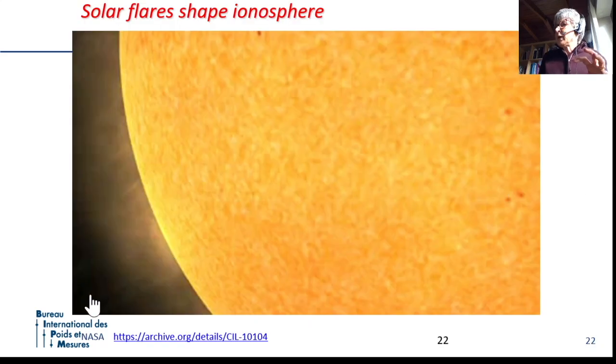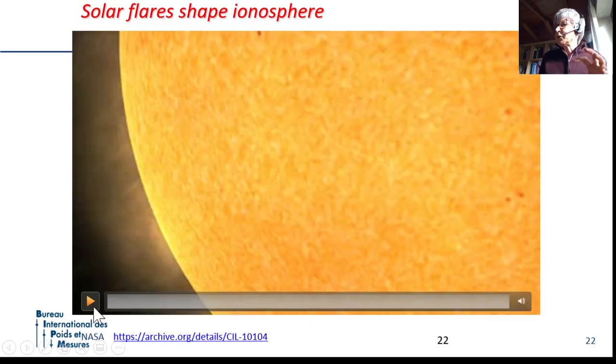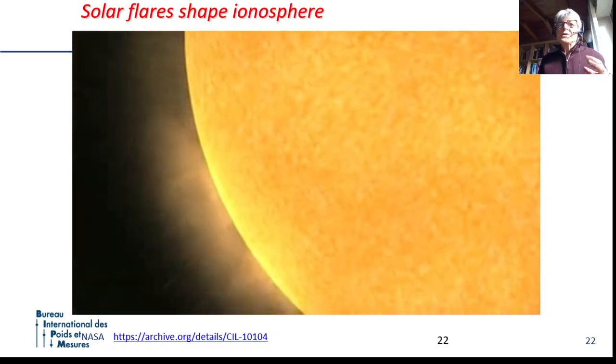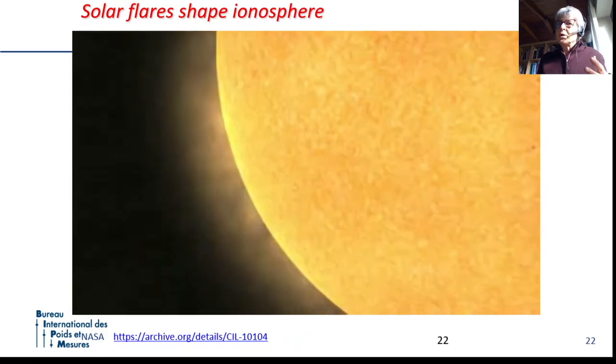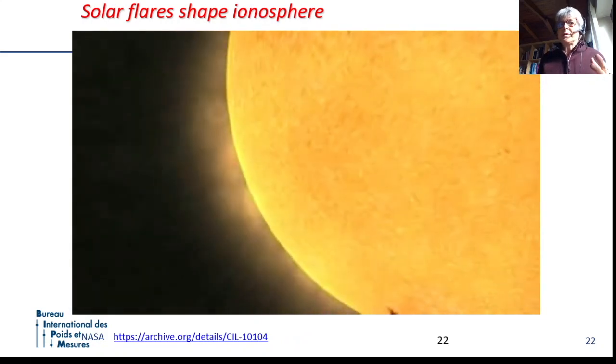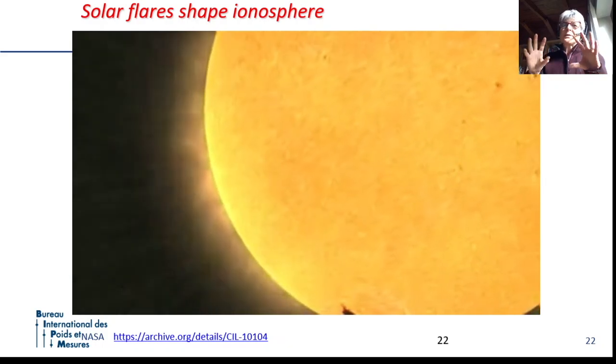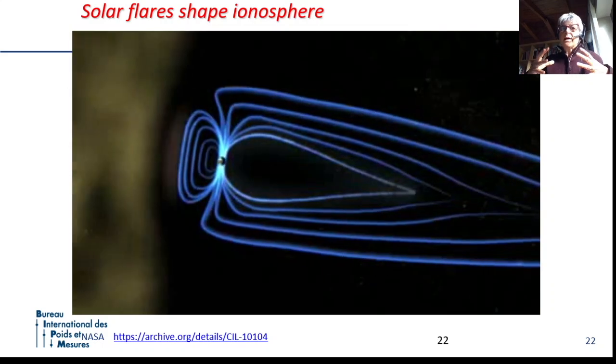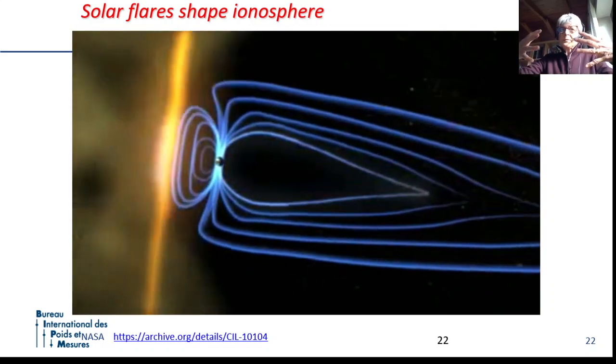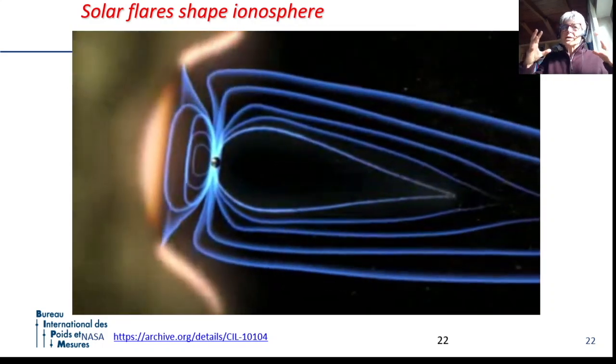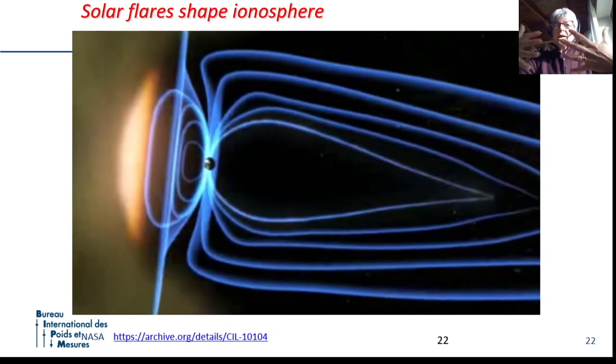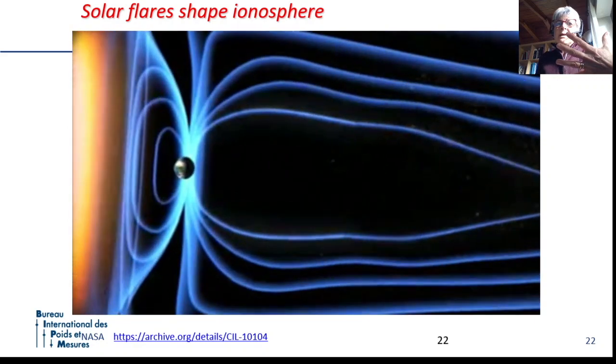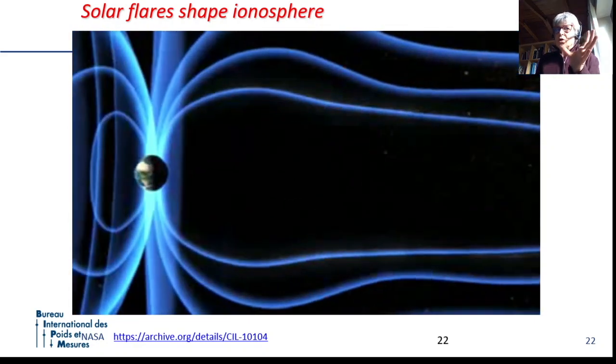And we can see the effect of the ionosphere with this nice video. This is due, the ionosphere is due to the sun activity. The sun is radiating, and in some cases, more energy and even particles are emitted in a solar flare.